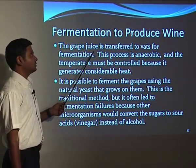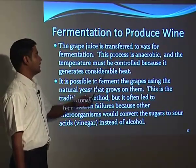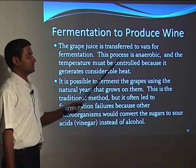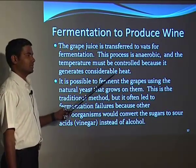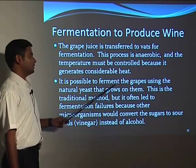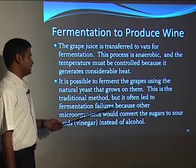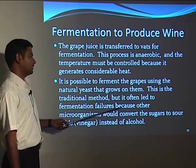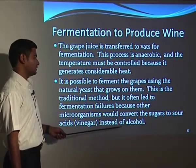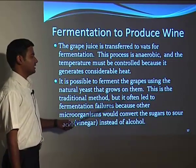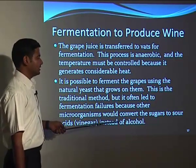For fermentation to produce wine, grape juice is the traditional raw material, transferred to vats for fermentation. This process is anaerobic and the temperature must be controlled because it generates considerable heat. It is possible to ferment grapes using the natural yeast that grows on them — this is the traditional method — but it often leads to fermentation failures because other microorganisms can convert the sugar to acids instead of alcohol, leading to a souring taste.